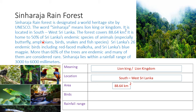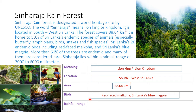It is home to 50% of Sri Lanka's endemic species of animals, especially butterfly, amphibians, birds, snakes, and fish species. Sri Lanka's 26 endemic birds include the red-faced malkoha and Sri Lanka's blue magpie. More than 60% of the trees are endemic and many are considered rare. Sinharaja lies within a rainfall range of 3,000 to 6,000 millimeters. Hope that you have completed it correctly.